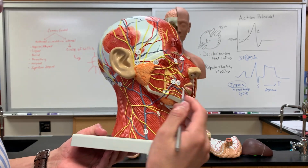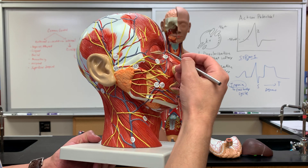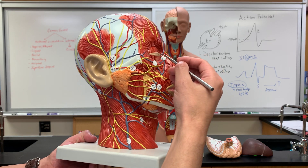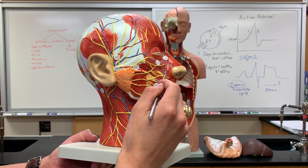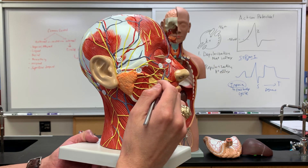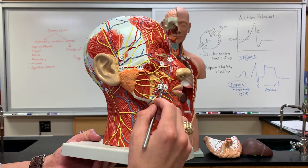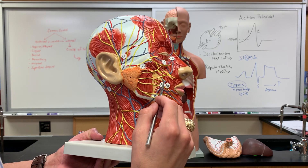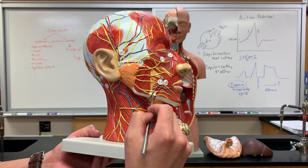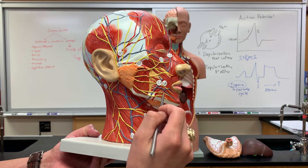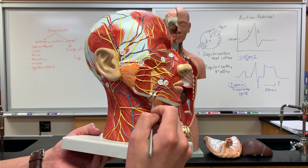Now if we look at number 56, this is what's known as the ophthalmic vein. Number 57 is the facial vein — the facial vein comes this way — and then this is the facial artery coming down here.